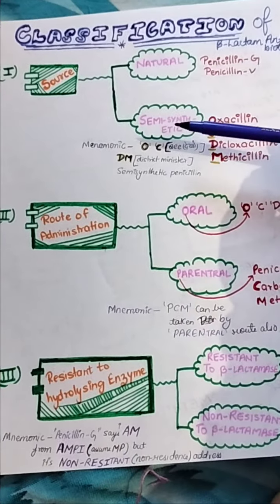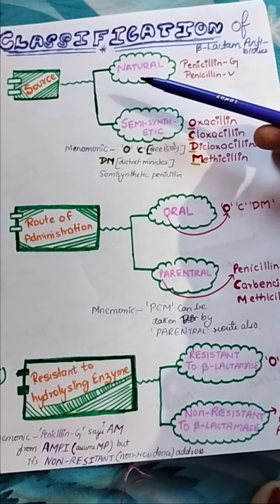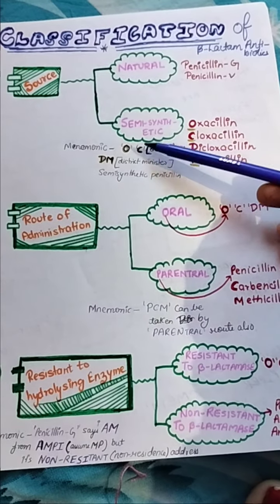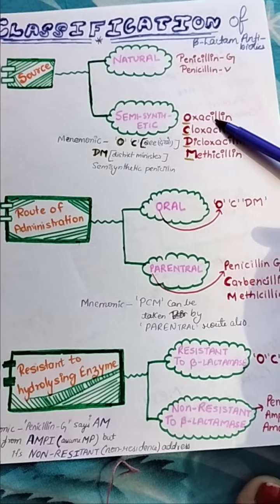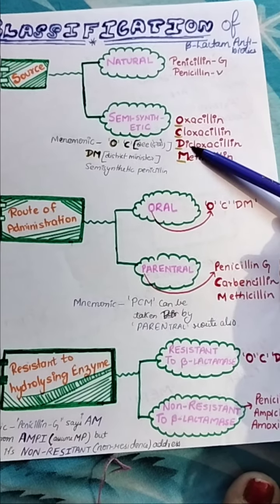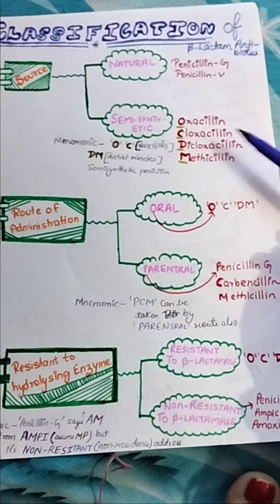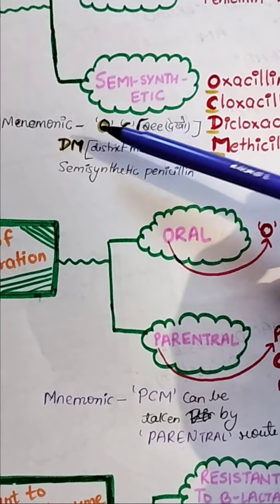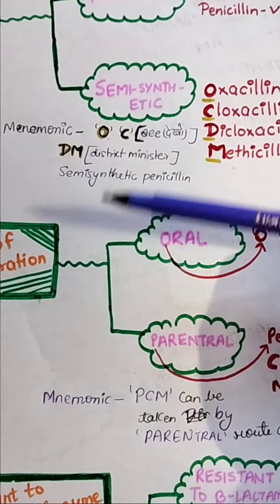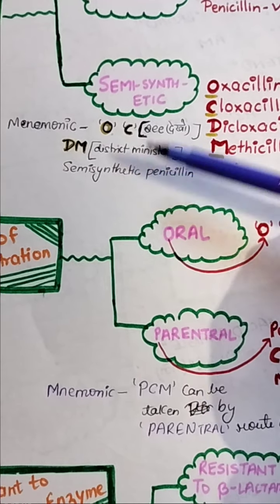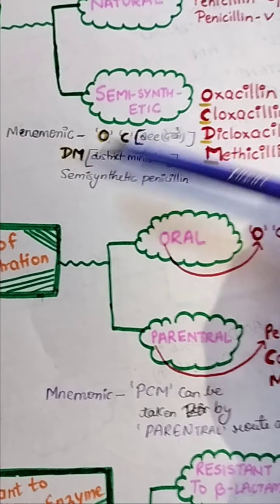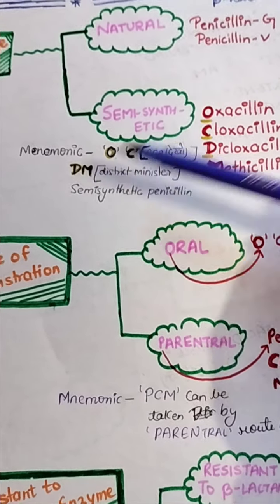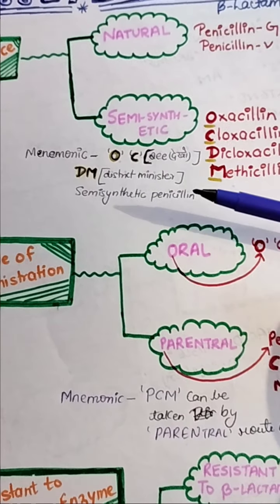The first source is natural and the second is semi-synthetic. For the natural source, it is penicillin G and penicillin V. For semi-synthetic source, it is oxacillin, cloxacillin, dicloxacillin, and methicillin. To remember this classification, we can use the mnemonic OCDM for semi-synthetic penicillin.